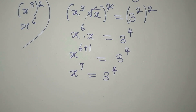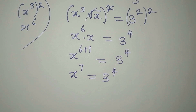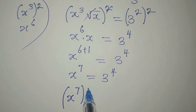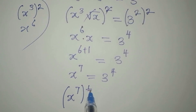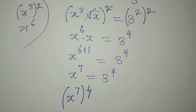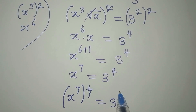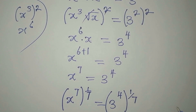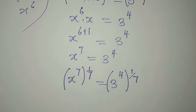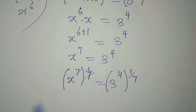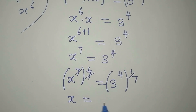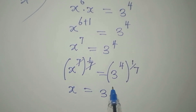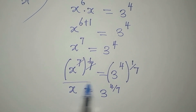To remove this power of 7, we multiply the power by its reciprocal. So we raise x to the power of 7, then multiply the power by 1 over 7, because 1 over 7 times 7 removes it. On the right-hand side, 3 to the power of 4 is also raised to the power of 1 over 7. Multiplying the two powers gives us 4 over 7, so x equals 3 to the power of 4 over 7. That is the answer from the first method.